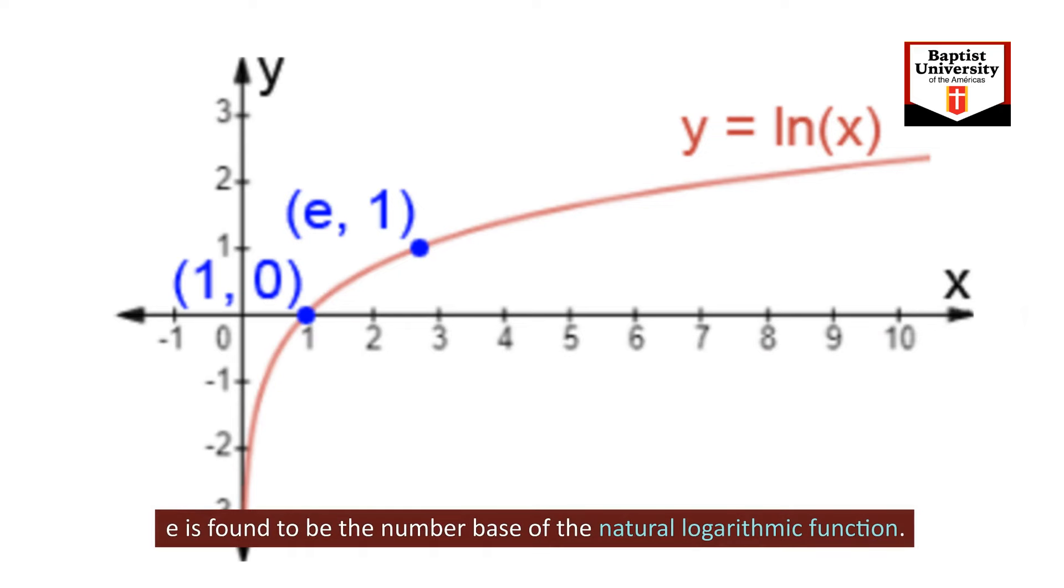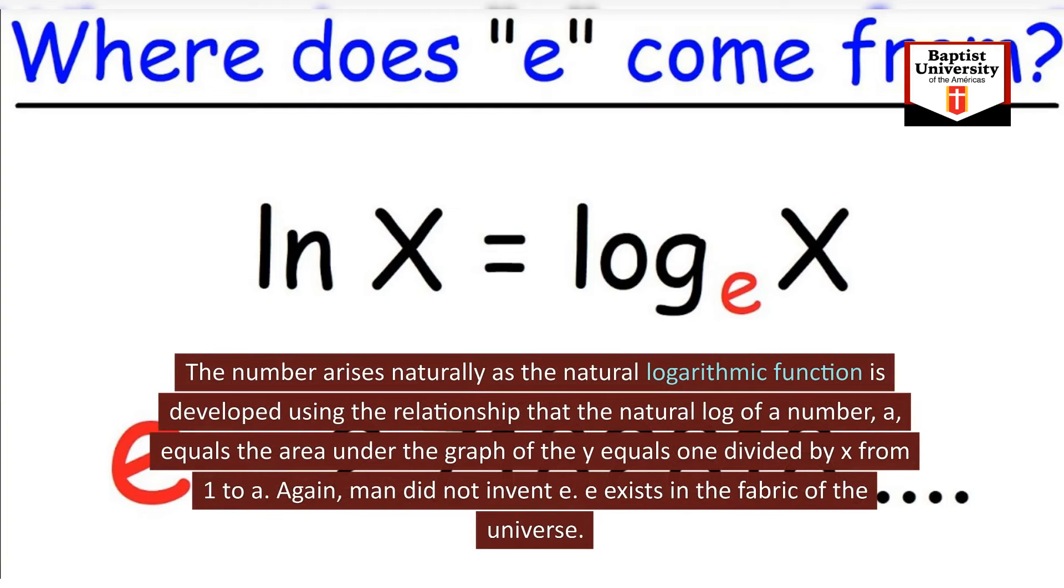E is found to be the number base of the natural logarithmic function. The number arises naturally as the natural logarithmic function is developed using the relationship that the natural log of a number, a, equals the area under the graph of y equals 1 divided by x from 1 to a.